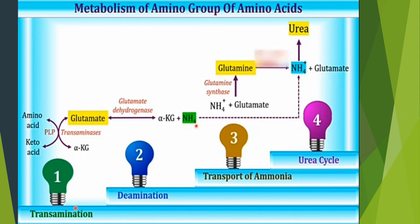As seen in previous videos, amino acid metabolism consists of different steps. The first step is transamination. During transamination, the amino group from an amino acid is transferred to a keto acid. As a result, another amino acid is formed — this is mostly glutamate. Glutamate acts as a collecting center of amino groups from various amino acids.